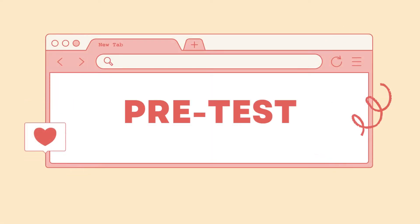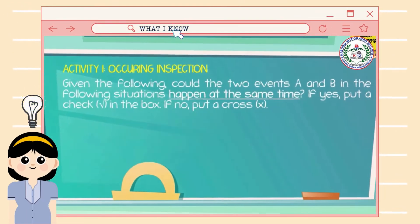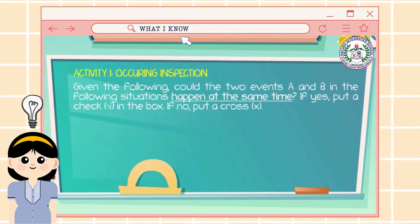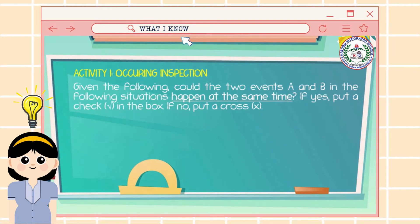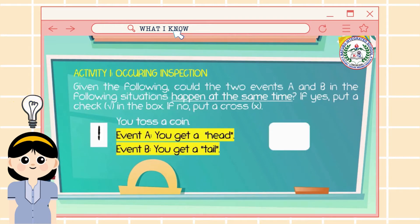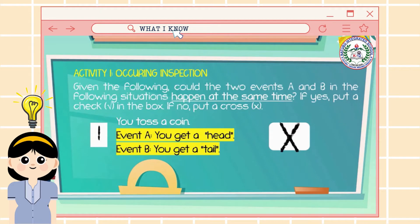Before moving on with our lesson, let us have this activity first. Given the following situations, could the two events A and B happen at the same time? If yes, put a check in the box; if no, put a cross. Number 1: You toss a coin — Event A, you get a head; Event B, you get a tail. The answer is Cross! We cannot get a head and tail at the same time.